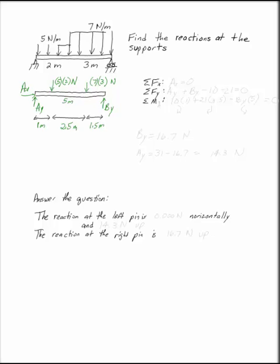Now I can write my equations of equilibrium. Sum of the forces in x tells me that I have zero, Ax is zero. Ay plus By minus 10 minus 21 equals zero, and sum of the moments gives me, if I take it at point A,